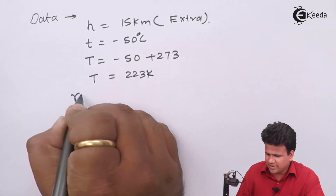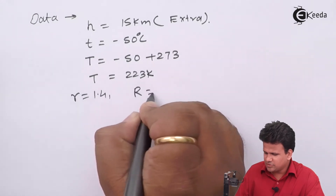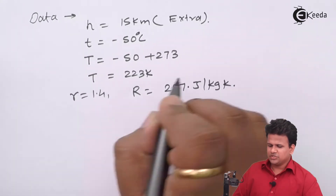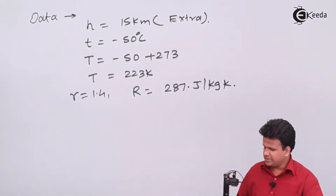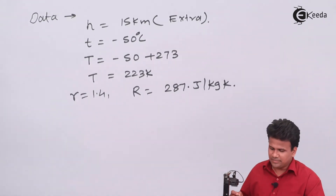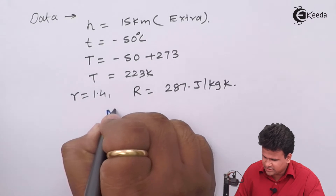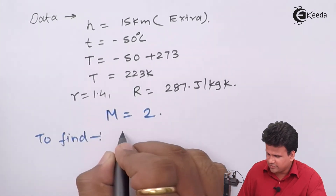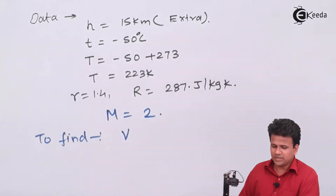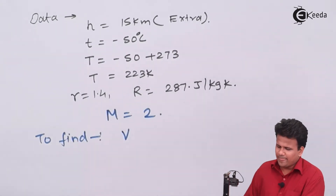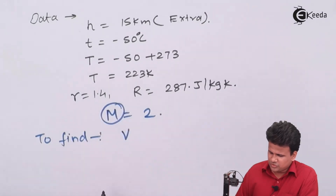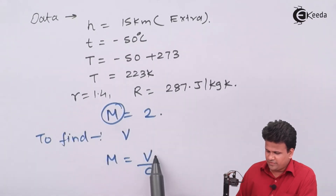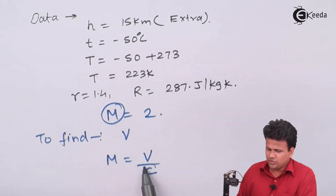The other given values are: gamma equals 1.4, R equals 287 kilojoule per kg Kelvin, and the Mach number equals 2. We have to find the velocity of the fluid. Since Mach number equals V divided by C, we need to calculate the velocity of sound C first, and then we can find V.